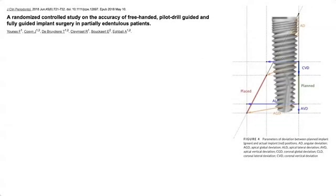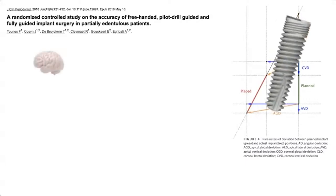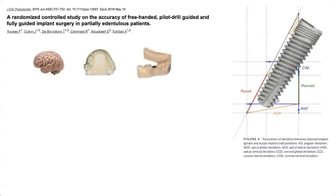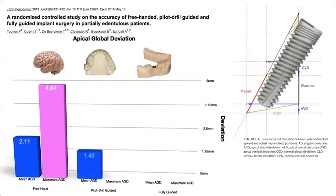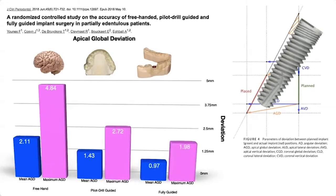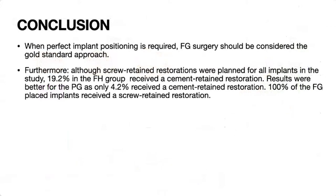This 2018 randomized controlled study by Unis on the accuracy of free-handed, pilot drill-guided, and fully guided implant surgery in partially edentulous patients measured apical global deviation. Results: freehand mean deviation was 2.11mm with a maximum of 4.84mm; pilot drill-guided mean was 1.43mm, maximum 2.72mm; fully guided was 0.97mm, maximum 1.98mm. The conclusion is that when perfect implant positioning is required, fully guided surgery should be considered the gold standard.